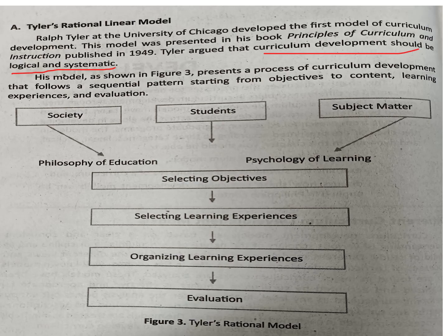The second consideration is the students. We have to know the types of students we have and determine the anatomy of the learners at each level. This gives us the idea of what contents to embed in a particular subject matter and what competencies will be formulated. Right next to it is the subject matter — referring to the core subjects such as English, Science, Mathematics, and Filipino.